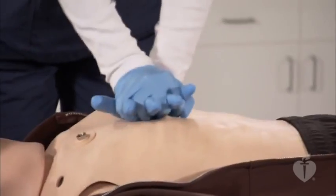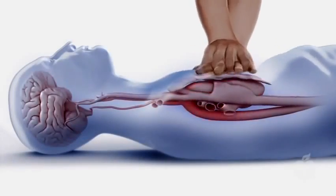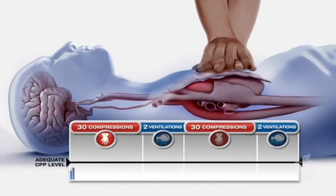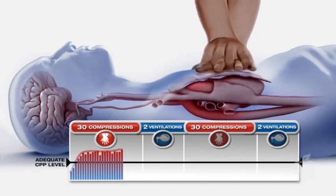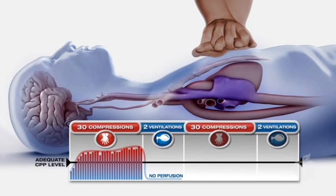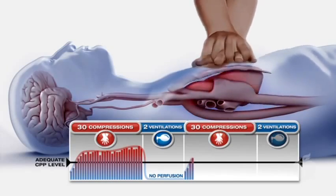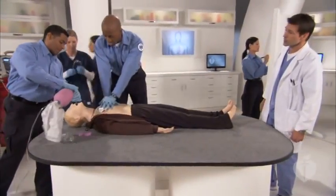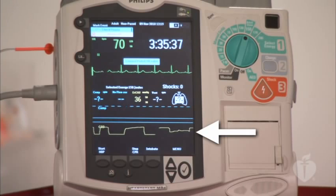One way to measure the effectiveness of chest compressions is with coronary perfusion pressure. Coronary perfusion pressure during CPR must reach at least 10 millimeters of mercury to potentially achieve return of spontaneous circulation, or ROSC. As chest compressions begin, it takes several compressions to raise the coronary perfusion pressure to a level adequate to supply blood to the heart. The higher the coronary perfusion pressure during CPR, the better the survival rate. When healthcare providers interrupt chest compressions, perfusion pressure falls dramatically and remains very low until compressions are restarted. Healthcare providers can monitor CPR quality with waveform capnography and intra-arterial relaxation pressures.